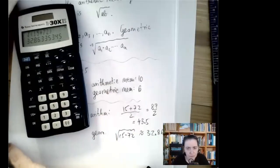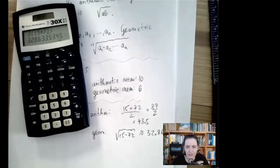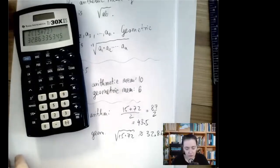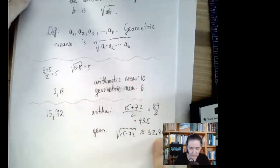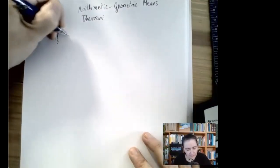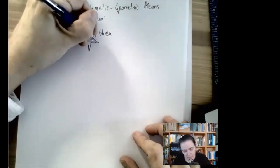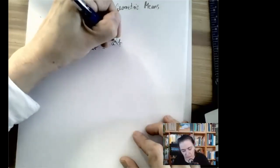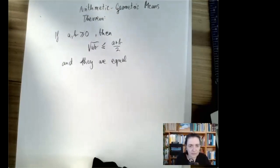It's easy to suspect that if you take the arithmetic mean of some numbers, that average will be somewhere in between — not smaller than the smallest data point or larger than the largest. That's true for the geometric mean as well. But what's interesting is that the geometric mean is always smaller — or at most equal. The Arithmetic-Geometric Means theorem states: if a and b are greater than or equal to zero, then √(ab) ≤ (a + b)/2, with equality if and only if a = b.